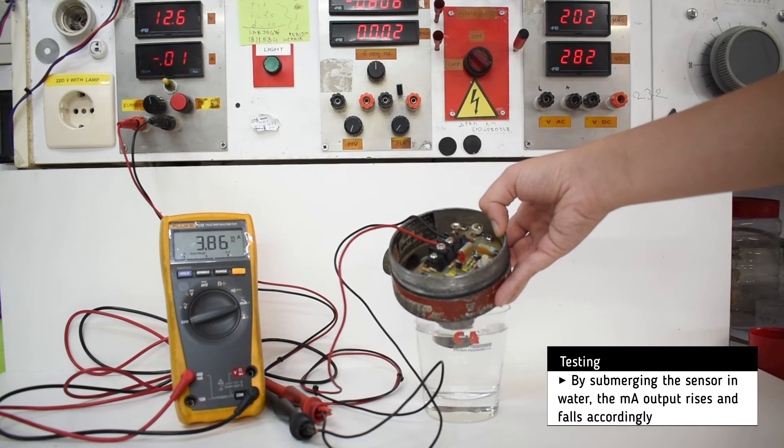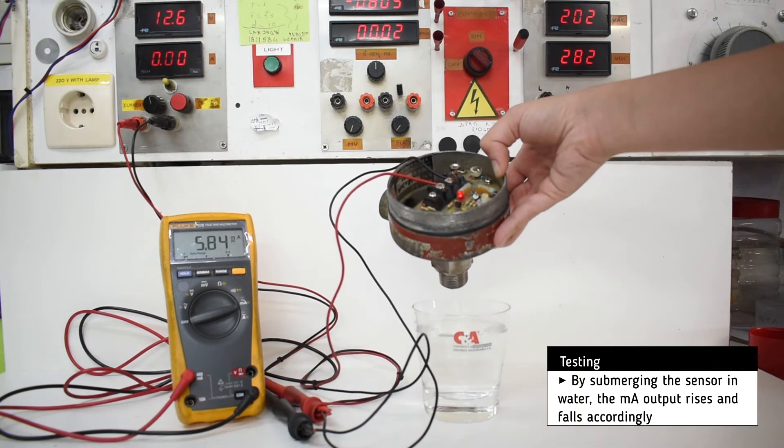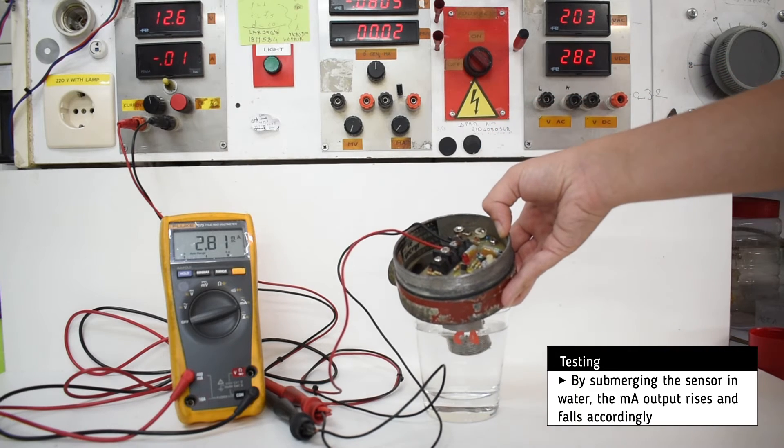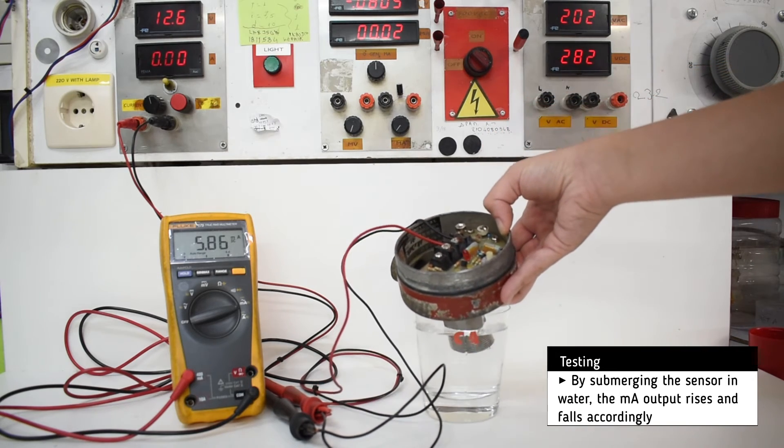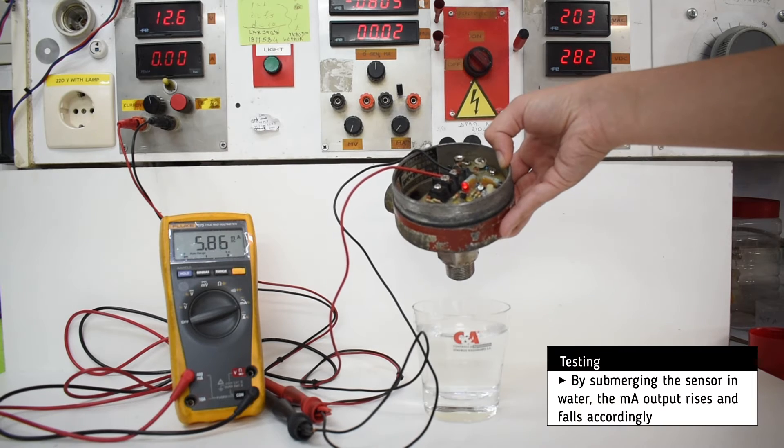When the sensor is not submerged in water, the output rises to about 5.8 milliamps and the LED indicator lights up.